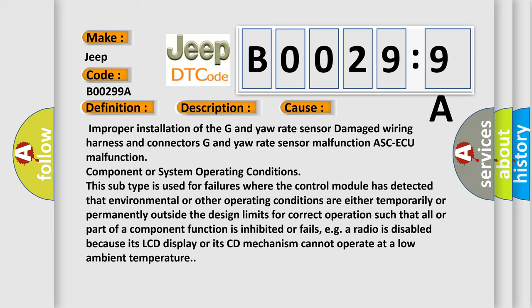This subtype is used for failures where the control module has detected that environmental or other operating conditions are either temporarily or permanently outside the design limits for correct operation such that all or part of a component function is inhibited or fails, e.g. a radio is disabled because its LCD display or its CD mechanism cannot operate at a low ambient temperature.